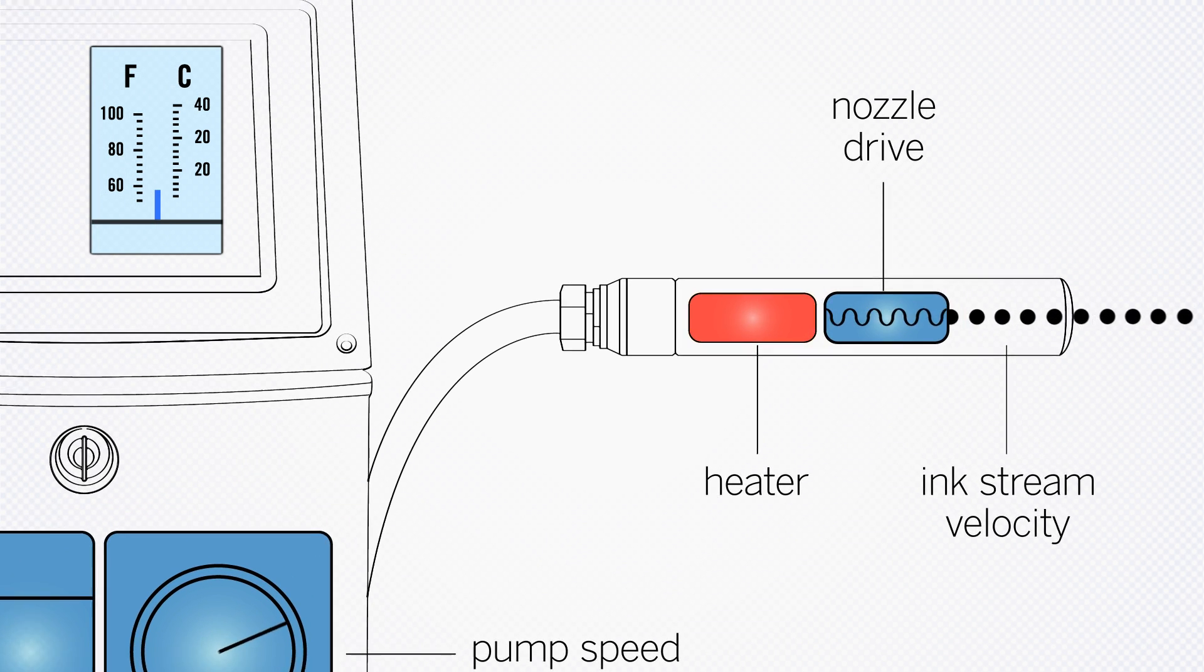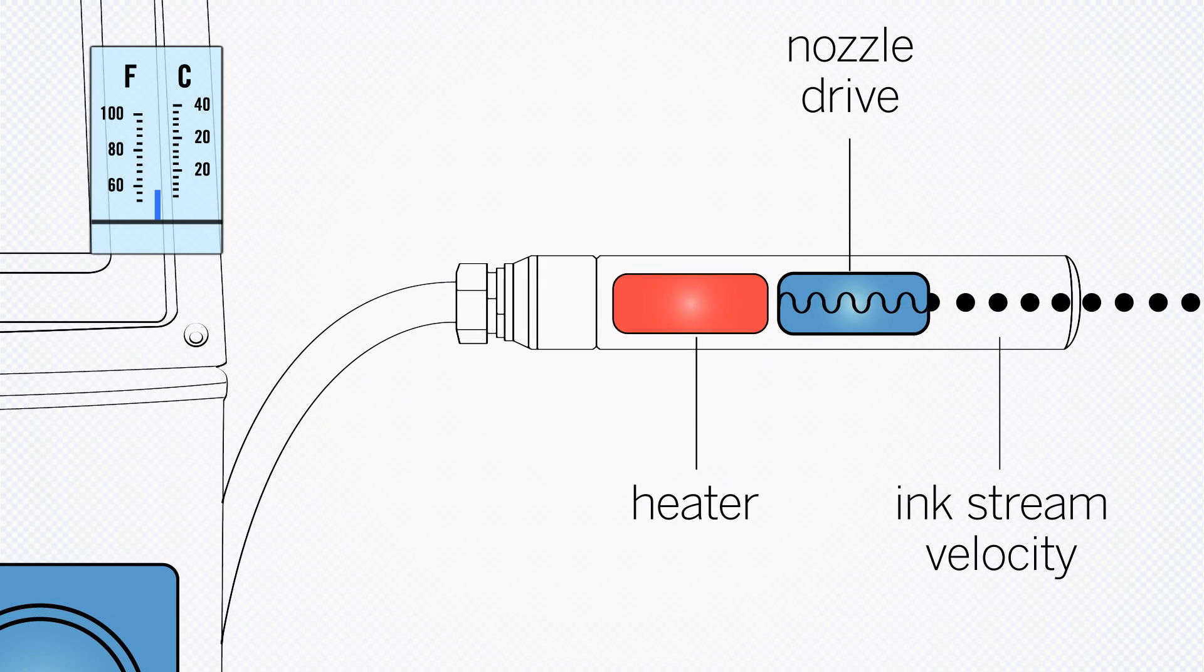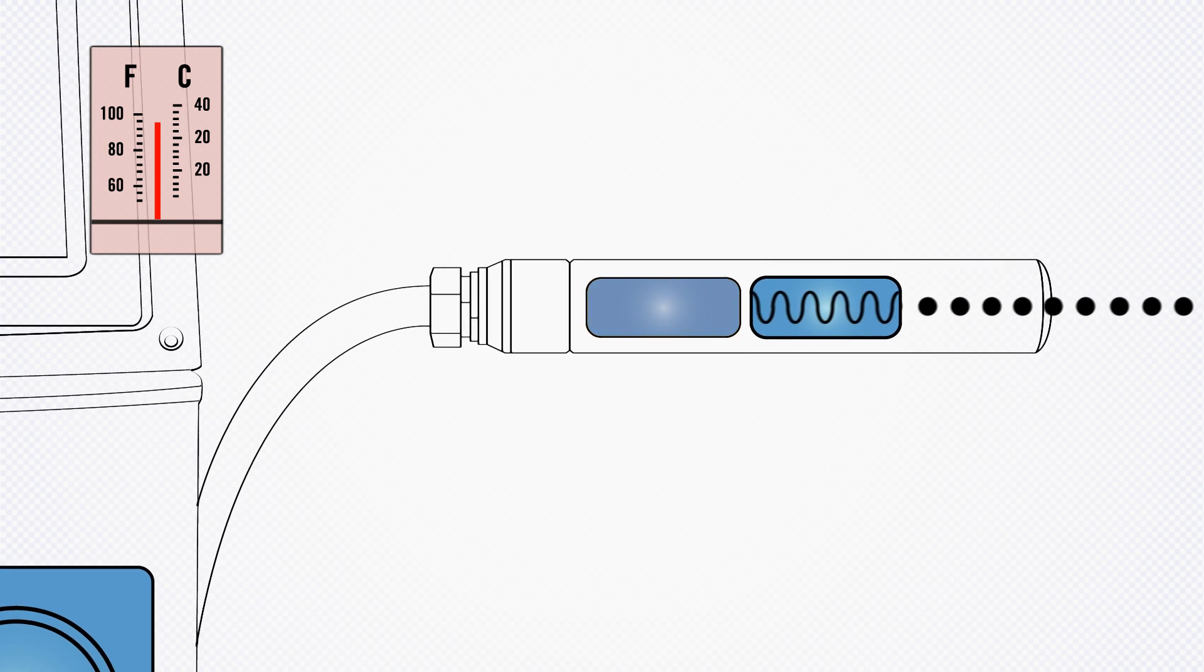The printhead heater is designed to maintain constant ink temperature even when ambient temperature and humidity changes. Thus, jetting characteristics remain constant under fluctuating conditions.